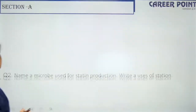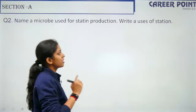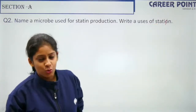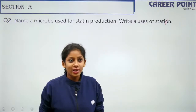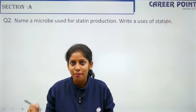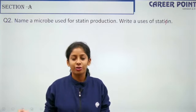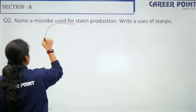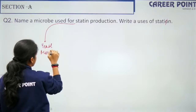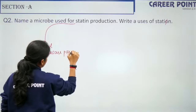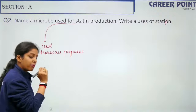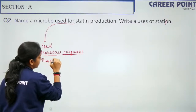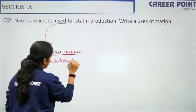Question 2: 'Name a microbe used for statin production and write the uses of statin.' Statin is obtained from the yeast Monascus purpureus — make sure you underline the name of the microbe. The use of statin is that it is a blood cholesterol-lowering agent.